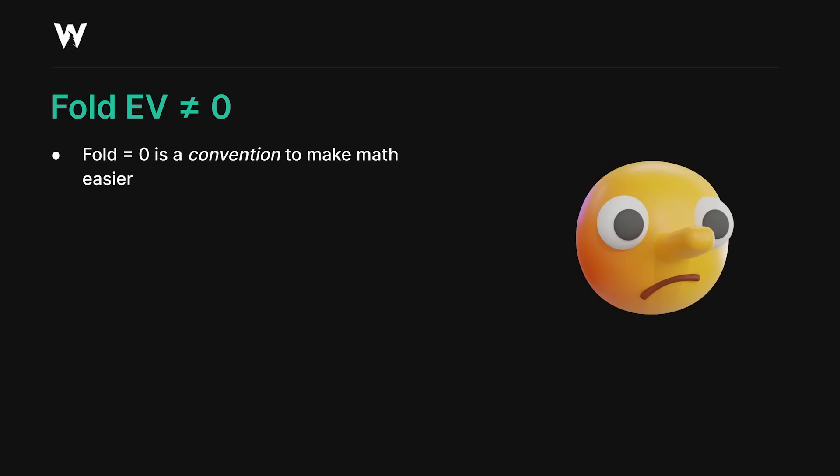You've probably heard that the EV of folding is equal to zero. That's a fine convention to make the math easier, but other reference points are also useful. What most solvers do is calculate EV as your stack at the start of a hand minus your stack at the end. For example, if you three-bet ace-queen suited on the big blind and face a four-bet, you can either fold, call, or shove.